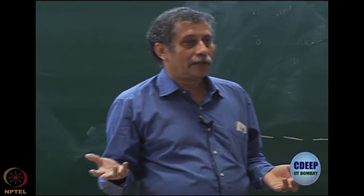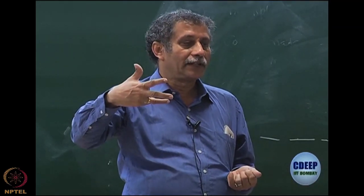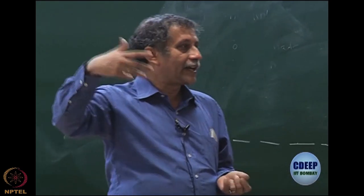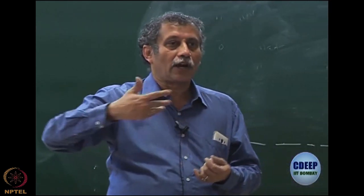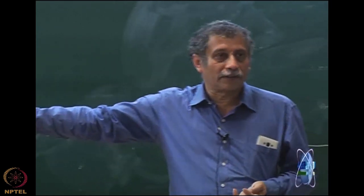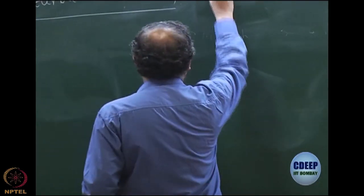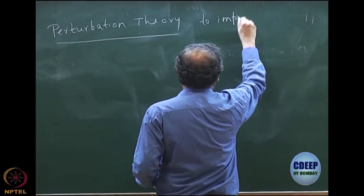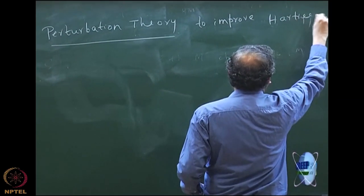In quantum chemistry also we can use it — even to solve one particular problem. For example, if I give you a harmonic oscillator perturbed by an anharmonic force field, say x cubed, then that x cubed can be taken as a perturbation and you can calculate energy in what are called orders of perturbation. So it is not that perturbation theory is used only for improvement of Hartree-Fock; it can be used in several problems. Right now, what we are going to do is to use perturbation theory to improve Hartree-Fock — so that will be our target.